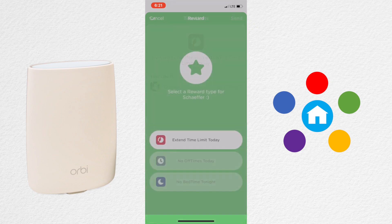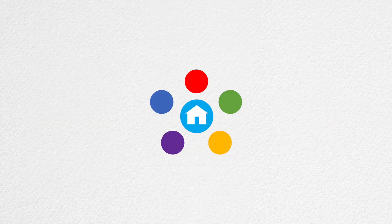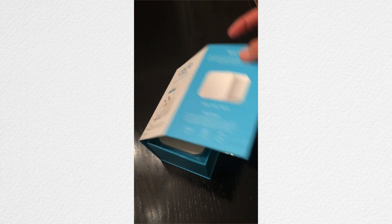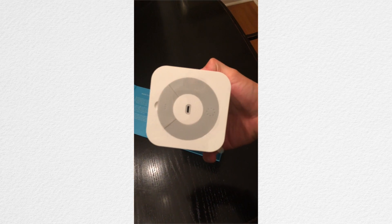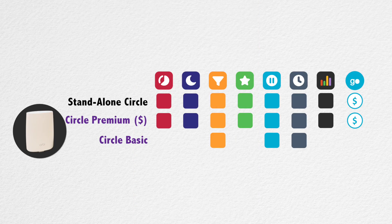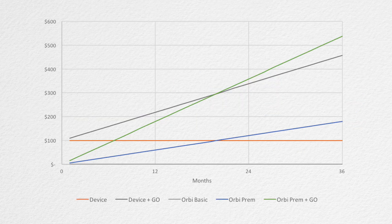There's an alternative to using the integrated Circle with Disney. You can also purchase the Circle with Disney as a standalone device, which connects to your router via Wi-Fi or an ethernet cable. The device itself does not have a monthly fee unless you enable Go. Therefore, if you plan to use Circle with Disney with premium features for over two years, it'd be cheaper to go with the device over the integrated system.